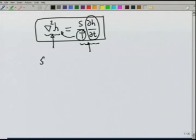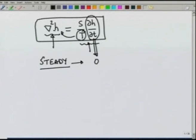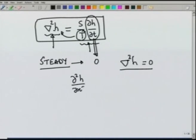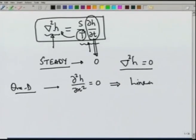We have already seen how to solve this equation for a steady state. If we have steady state flow, the parameters are not changing with time — the head remains constant with time and only changes with space. Therefore, the del H by del t term can be ignored as zero. The equation we then get is the Laplace equation. If we assume the flow is one-dimensional, for flow in the x direction, the second derivative of H with respect to x equals zero.